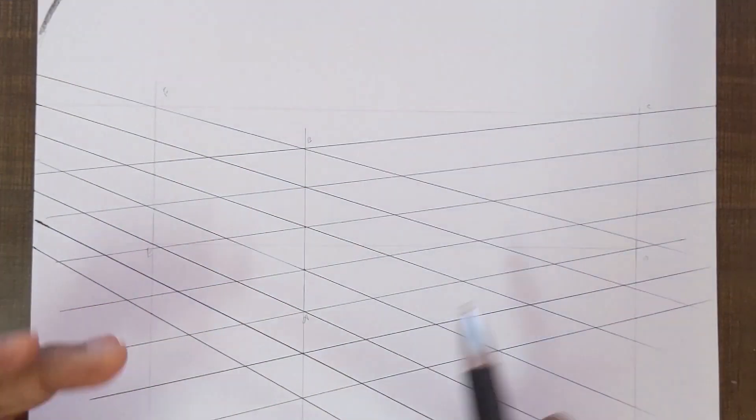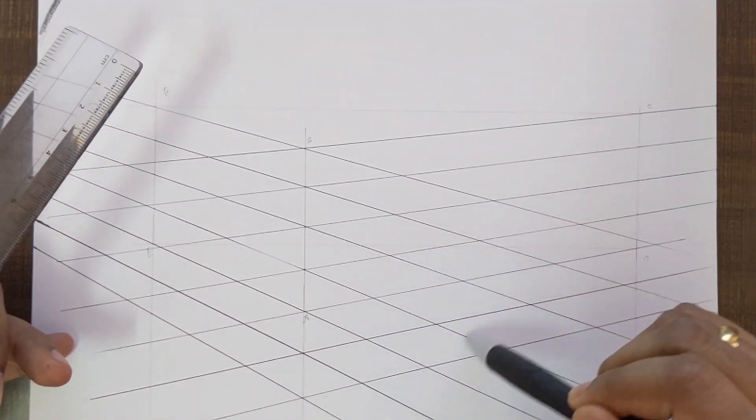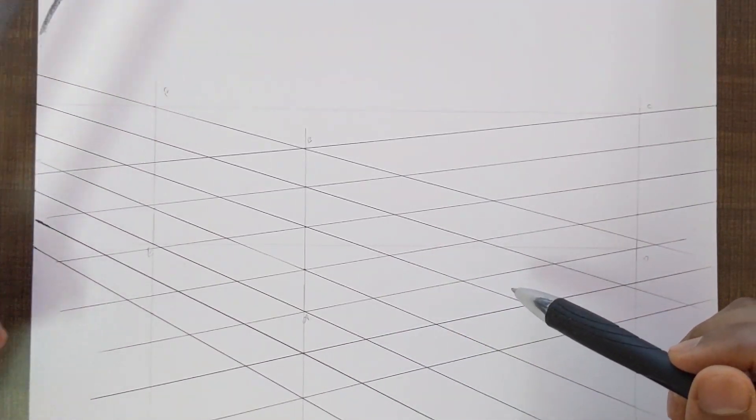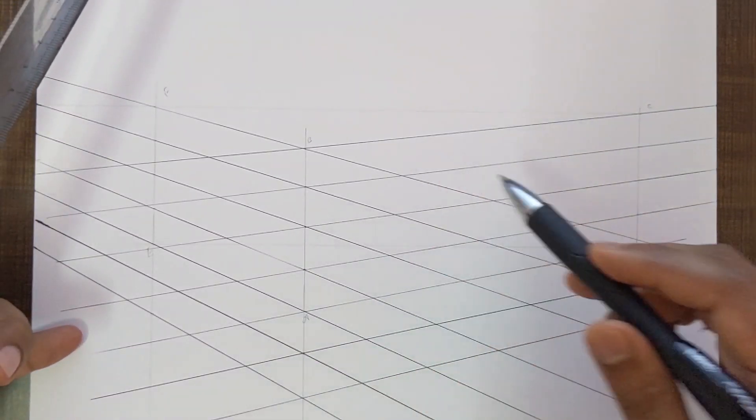Now we have a perfect grid which is in two-point perspective whose vanishing points are off the page. Whatever you draw using this grid won't be distorted; that is the main intention, and you can draw bigger size objects.